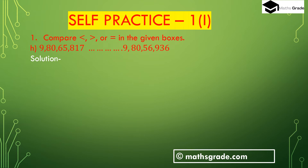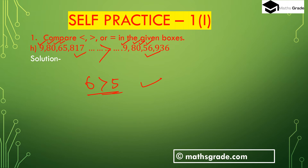Part (h): 9,80,65,817 and 9,80,56,936. Compare the highest place value: both have 9 in the crore place. Then move to the 10-lakh place: both have 8. Then the lakh place: both have 0. Then the 10,000 place: 9,80,65,817 has 6 and 9,80,56,936 has 5. Since 6 is greater than 5, therefore 9,80,65,817 is greater than 9,80,56,936, so we apply the greater than symbol.